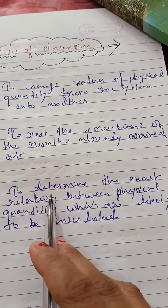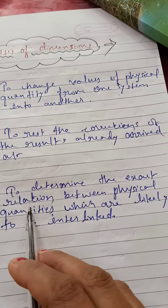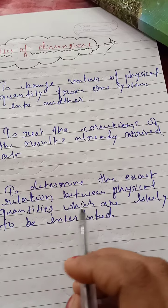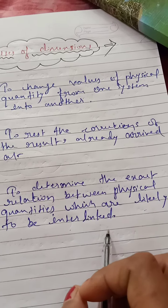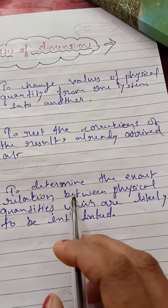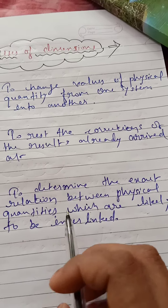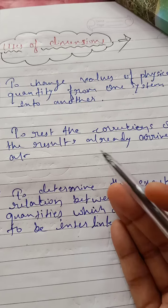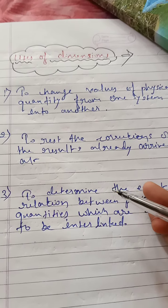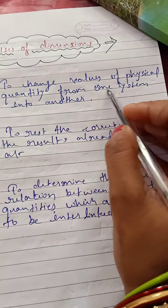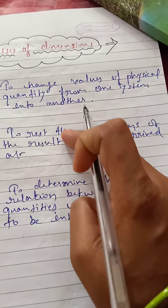The third use is to determine the exact relation between physical quantities which are likely to be interlinked. Any quantity in physics that is related, you can check it dimensionally or prove it.